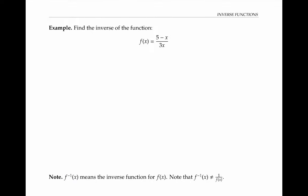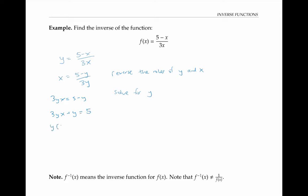It'd be nice to have a more systematic way of finding inverses of functions besides guessing and checking. One method uses the fact that inverses reverse the roles of y and x. So if we want to find the inverse of f of x equals five minus x over three x, we write it as y equals five minus x over three x, reverse the roles of y and x to get x equals five minus y over three y, and then solve for y. To solve for y, multiply both sides by three y, bring all terms with y's to the left side and all terms without y's to the right side, then factor out the y and divide to isolate y. This gives us f inverse of x as five over three x plus one.